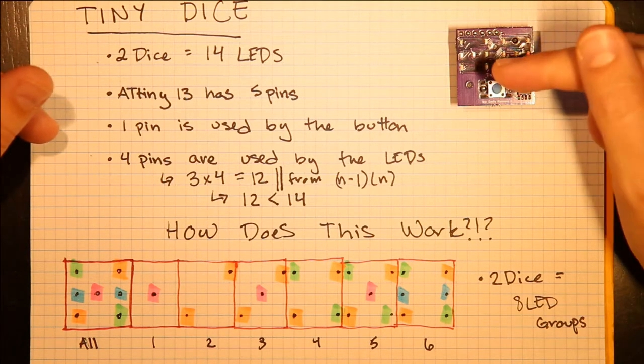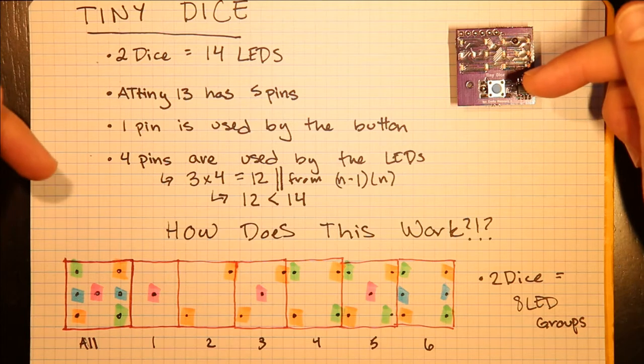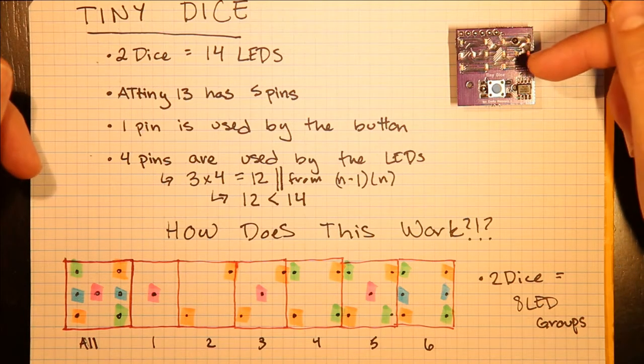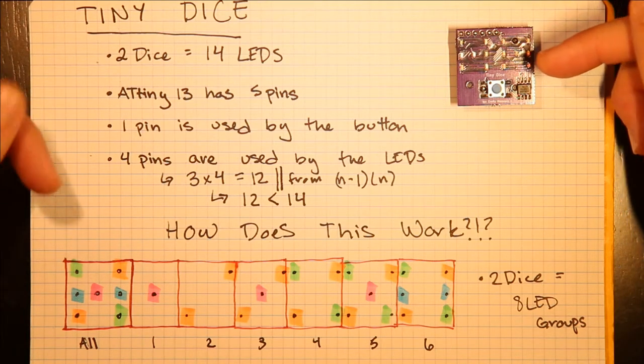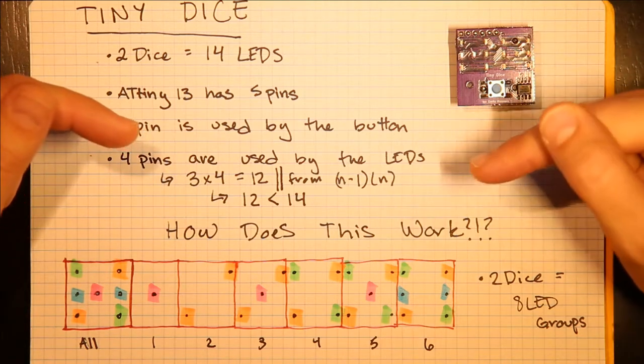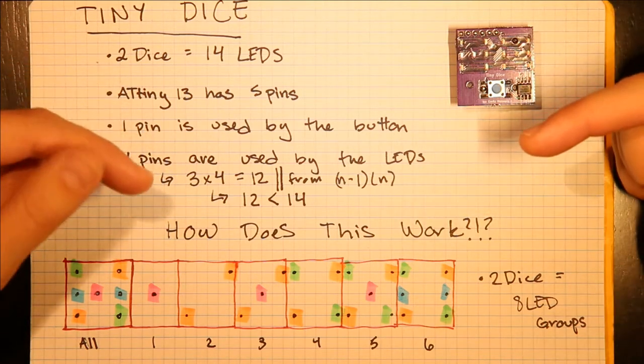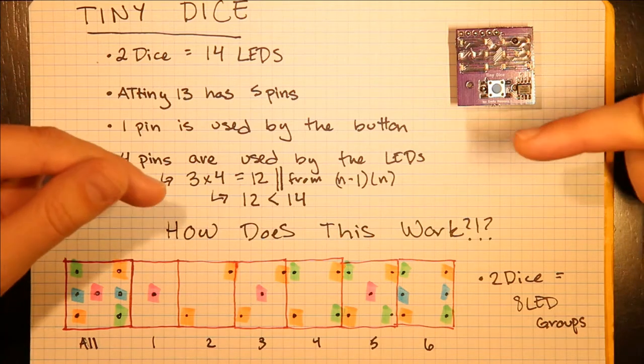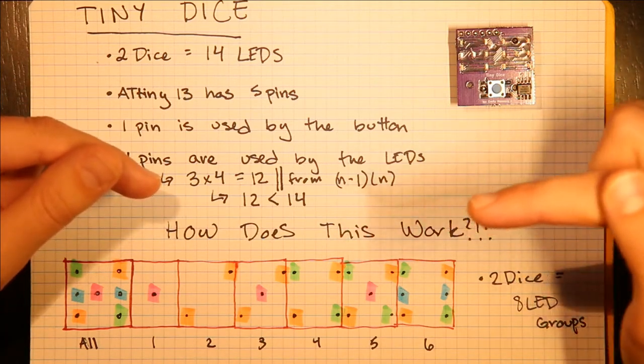One of those pins is used for the button, which means four are used for the LEDs. However, three times four is 12 from the Charlieplexing equation, which is in the previous video, but 12 is less than 14.